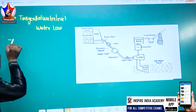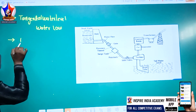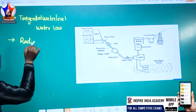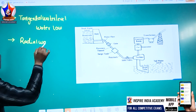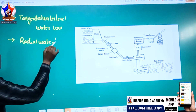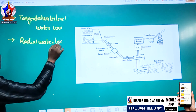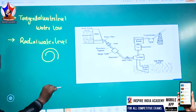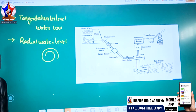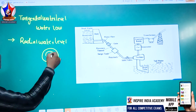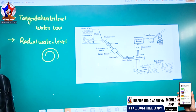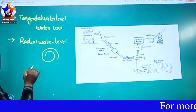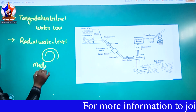Number 2 is Radial Water — the Radial Water Level. It means the water is in the middle of the earth. We call it Radial Water Levels. It means the water is at a medium level.